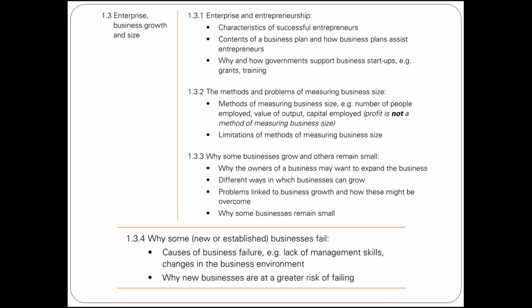When it comes to the exam, the main points I saw on past papers are the meaning of entrepreneurs and their characteristics. This will probably be in part B and C of paper one. Business size is also important — specifically the limitations, which they tend to ask about.